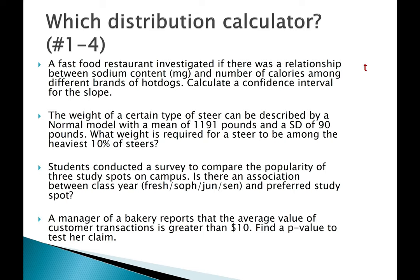The second scenario is a probability question — it states that the weight of the steer can be described by a normal model, meaning individual weights have a normal distribution. So even though it's quantitative, we use the normal distribution calculator. The third scenario asks if there's an association between class year and preferred study spot — both categorical variables — so this would be a chi-squared test of independence.